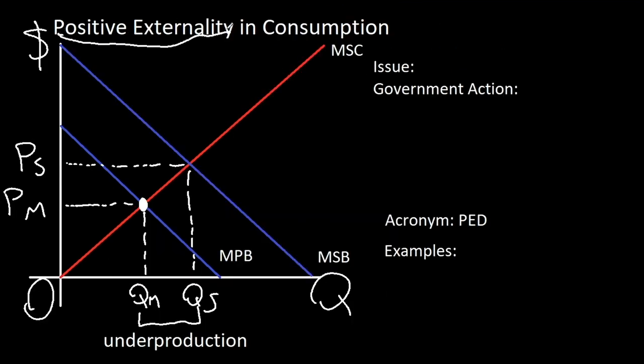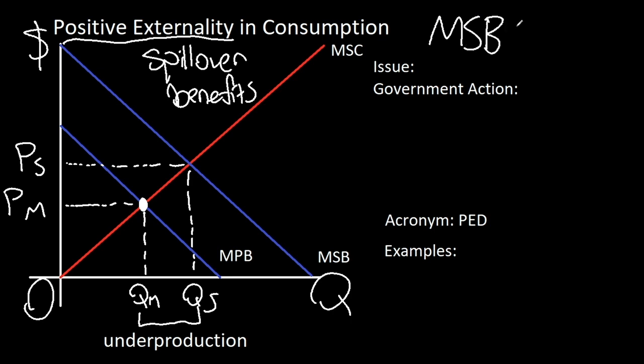So we first have a positive externality in consumption. Since it's in consumption, we have two demand curves, or two marginal benefit curves. A positive externality is created from spillover benefits, meaning that society as a whole is benefiting more than the firm. Although this may sound like a good thing, this actually isn't, as we then get an issue of underproduction, where not enough of the good is being produced.